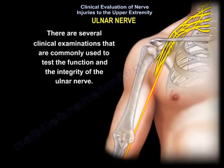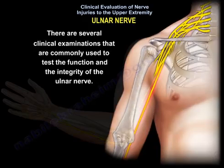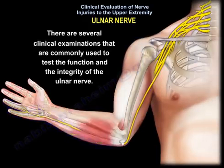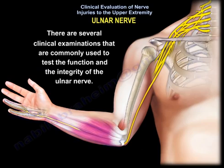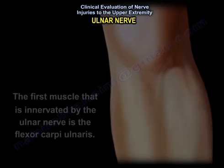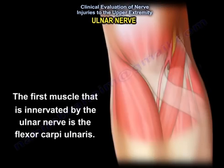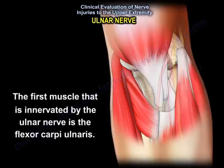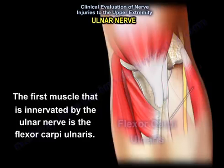This video covers clinical examinations commonly used to test the function and integrity of the ulnar nerve. The first muscle innervated by the ulnar nerve is the flexor carpi ulnaris.